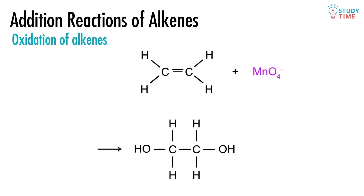The product of oxidizing an alkene like ethene is called a diol — it has two OH groups attached to the carbon atoms, making it essentially a double alcohol. The name of this diol is ethane-1,2-diol. Note especially that it's ethane, not ethene.